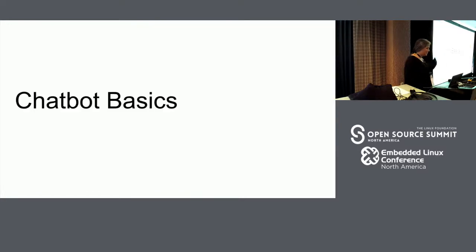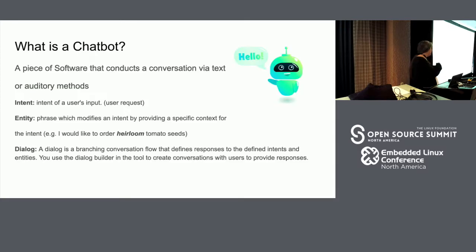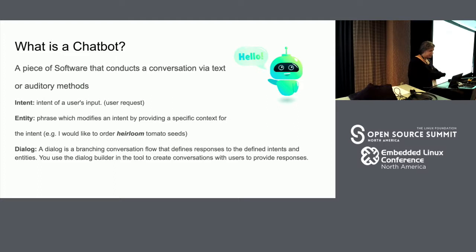In order for gaming to really evolve beyond that, it has to be taken in a different direction. Two directions I think are very important over the next few years — the first is chatbots. A chatbot is basically a piece of software that conducts a conversation via text or auditory methods. It tries to interpret the user's intents, and it has entities — basically adverbs and adjectives — to modify those intents. It collects data about the user and goes through a dialogue flow, a branching conversation flow that defines the responses to intents and entities.